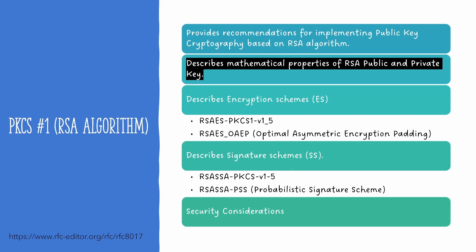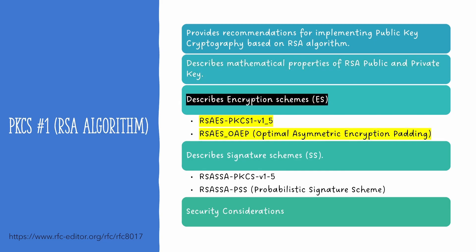Public keys are distributed publicly whereas the private key is kept secret. RSA keys are based on the difficulty of factorization — it is incredibly difficult to factorize a product of two large prime numbers. There are two encryption schemes described in PKCS#1: the first is RSAES-PKCS1, where ES stands for encryption scheme, and the second is RSAES-OAEP, where OAEP stands for Optimal Asymmetric Encryption Padding.